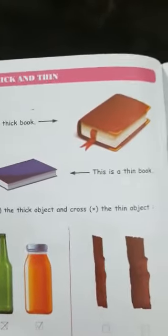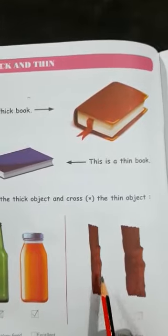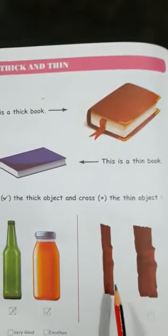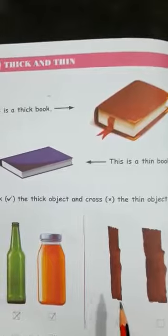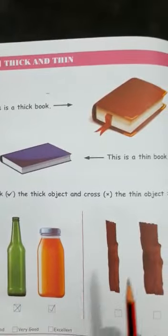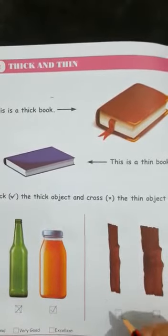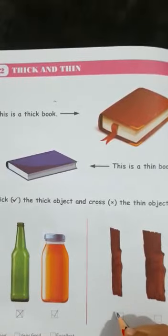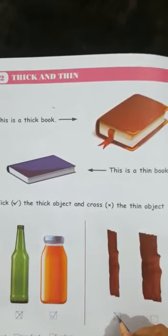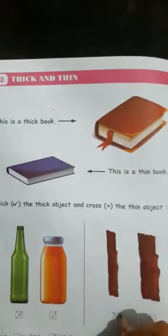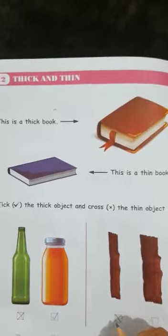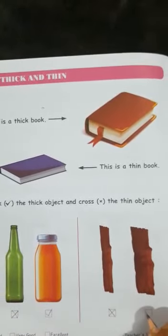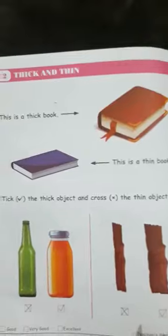Next one: this is a wood — is it thick or thin? This is thin because it has a small width, or we can say it is small size-wise. So we have to put a cross here. And this one is thicker in size, so we have to put a tick here.